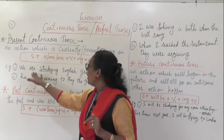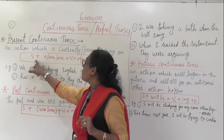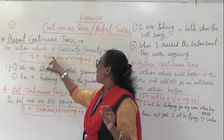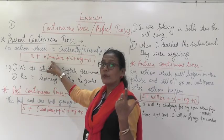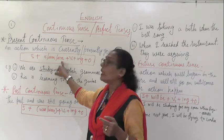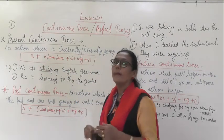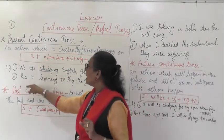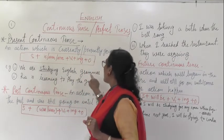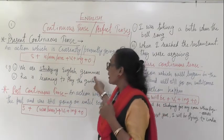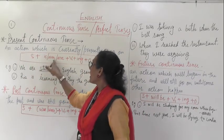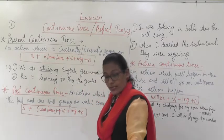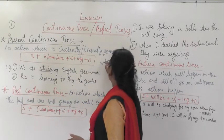The structure of present continuous tense is: Subject + is/am/are + V1 + ing + Object. We use 'am' with the first person pronoun 'I', and 'are' for the plural. So the example is: 'We are studying English grammar.' Here, 'we' is the subject, 'are' is the auxiliary, and 'study + ing' gives us 'studying'.